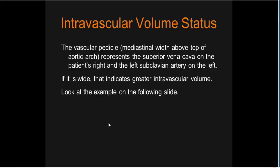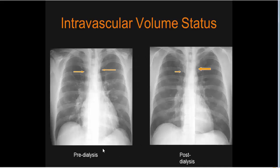Intravascular volume status: the vascular pedicle width above the aortic arch — representing the superior vena cava on the right and the subclavian artery on the left — is widened when intravascular volume is increased. Pre-dialysis and post-dialysis examples demonstrate changes in intravascular volume status as linear markings.